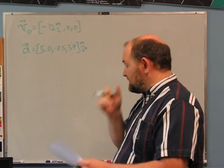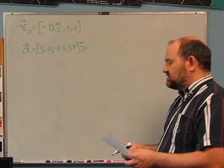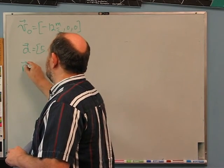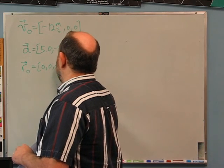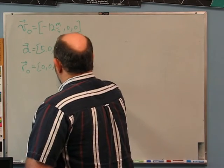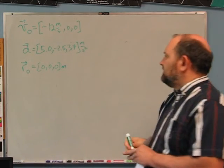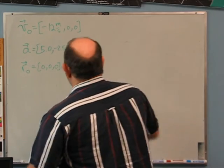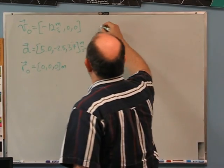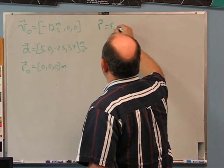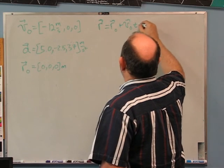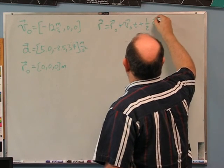The particle starts at the origin, so r₀ = (0, 0, 0) meters. Where is the particle after 2.0 seconds? Because the acceleration is constant, we can use the kinematic equation: r = r₀ + v₀t + ½at².